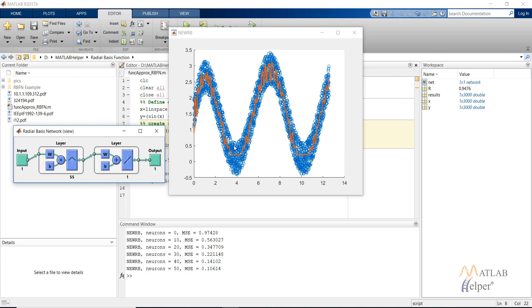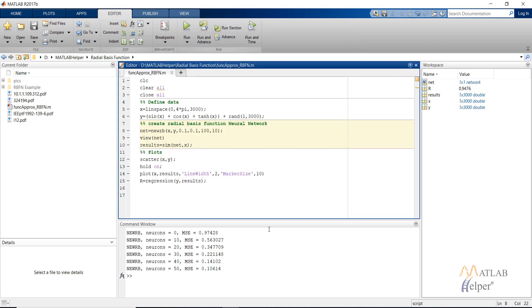So you can vary the value of spread and check which value is best for your data set. We also have other neural network functions for creating a radial basis function. One of them is newrbe.